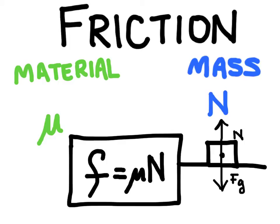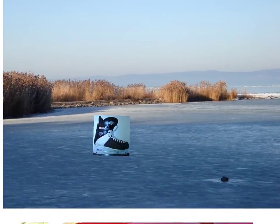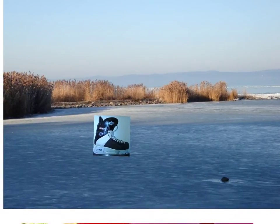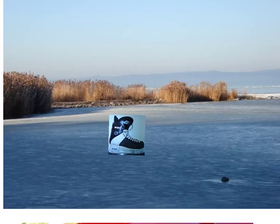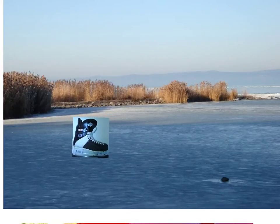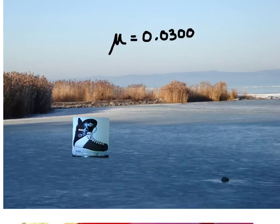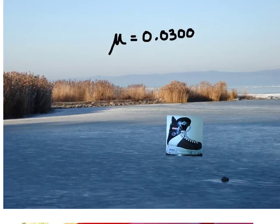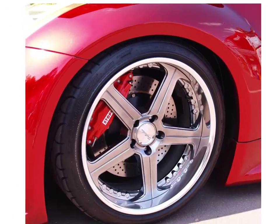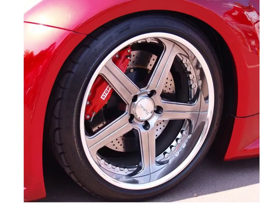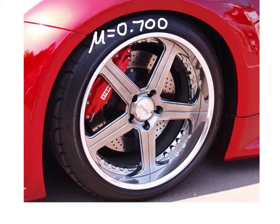Let's look at some examples of coefficients of friction. Steel on ice, as in a hockey skate on a frozen pond, is going to have a coefficient of friction equal to about 0.03. There are no units for the coefficient of friction. This is a very, very low value, and that's why skates are able to slide across ice very easily. For rubber on asphalt, like a car tire on the road, we're going to have a coefficient of friction equal to about 0.7. You can see that this number is a lot greater than 0.03, and so there's much more friction between rubber and asphalt.